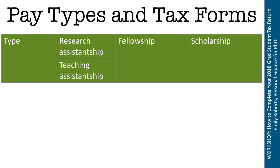Assistantships — research assistantships, teaching assistantships, graduate assistantships — pay your stipend or salary. Fellowships also pay your stipend or salary; fellowship is a catch-all term for something that pays your stipend or salary that is not an assistantship, such as a training grant. Scholarships are another catch-all term for money given to pay your education expenses — things like tuition waivers or tuition remission — the part of your funding going directly to paying expenses.